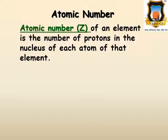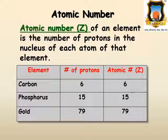Atomic number: Atomic number (Z) of an element is the number of protons in the nucleus of each atom of that element. For example, carbon has six protons and its atomic number is six. Phosphorus has 15 protons and its atomic number is 15. Gold has 79 protons in its nucleus and its atomic number is 79.